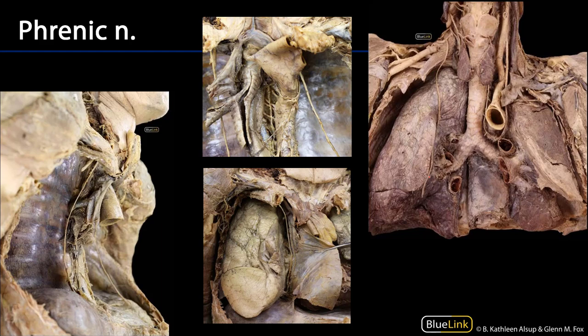The phrenic nerves come from the cervical plexus predominantly, so they are rooted in ventral primary rami of cervical nerves 3, 4, and 5 — with 5 coming from the brachial plexus. The brunt of the phrenic nerve is coming from C4, however.